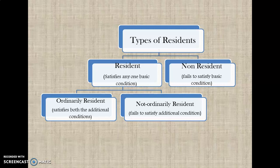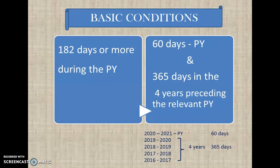We were talking about basic conditions and additional conditions, based on which we classify an individual as a resident or a non-resident. There are two basic conditions. The first is: the individual must have stayed in India for a period of 182 days or more during the previous year. The second basic condition is: the individual must have stayed in India for 60 days in the previous year and 365 days in the 4 years preceding the relevant previous year. In the second condition, both components — 60 days and 365 days — must be satisfied.